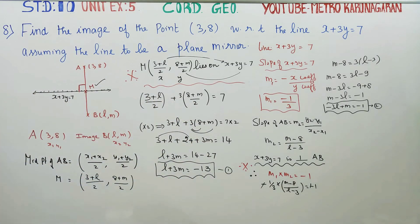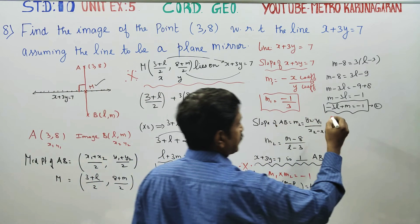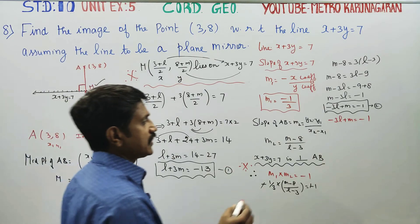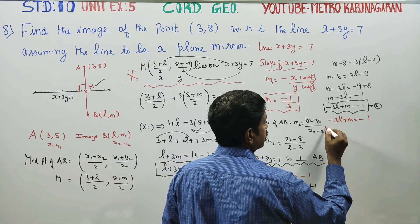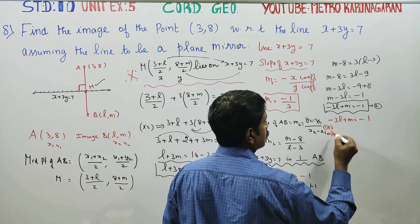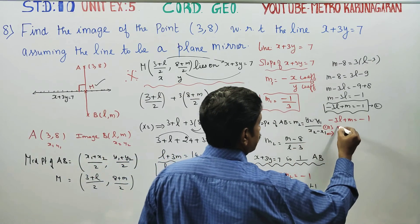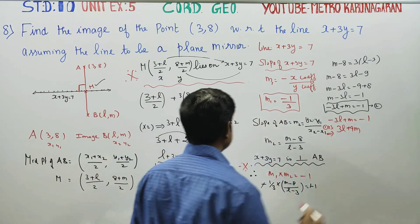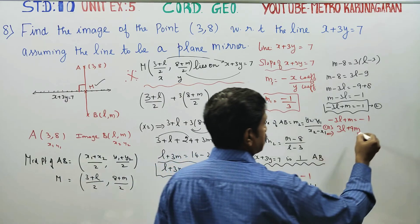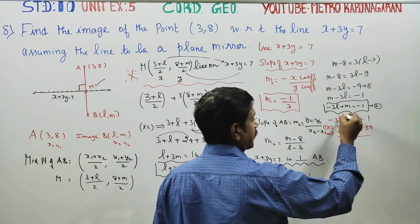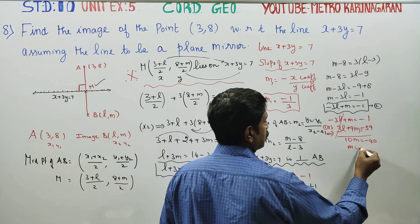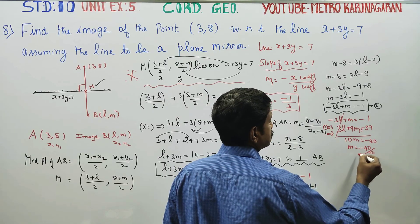Solving equations 1 and 2: equation 1 is L plus 3M equals minus 13, equation 2 is minus 3L plus M equals minus 1. Multiply equation 1 by 3: 3L plus 9M equals minus 39. Adding to equation 2: 10M equals minus 40. Therefore M equals minus 4.